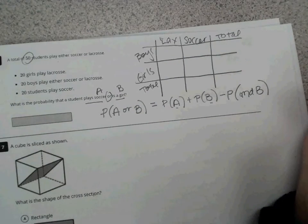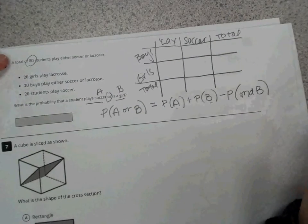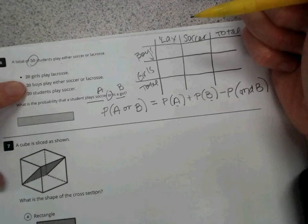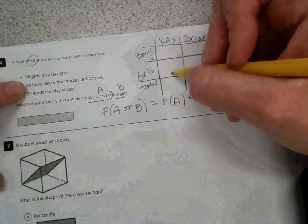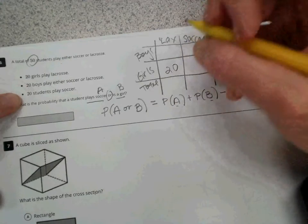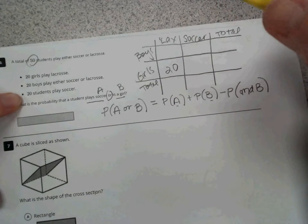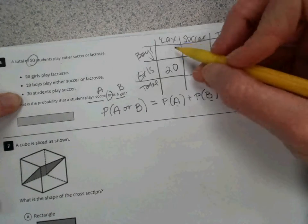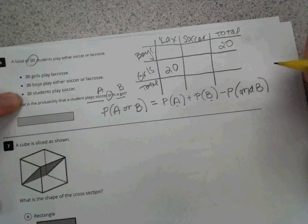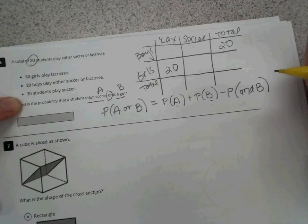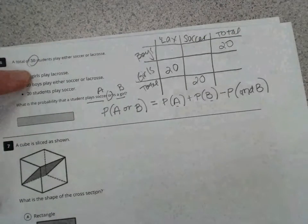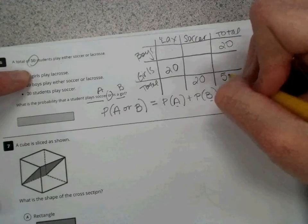And now we can fill in the given information and do some simple subtraction to find the missing pieces. So 20 girls play lacrosse, so girls lacrosse we put a 20. 20 boys play either soccer or lacrosse, so that means there's 20 boys total. And 20 students play soccer. And back to the beginning, we know there's 50 total students. So that's our given information.